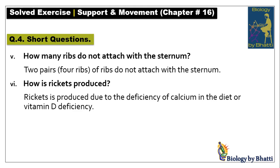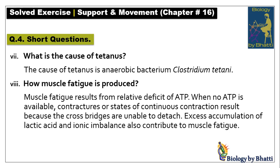Short question five: floating ribs are attached to the last four ribs and are called floating ribs. Number six: how is rickets produced? Rickets is produced due to deficiency of calcium in the diet or vitamin D deficiency. Short question seven: the cause of tetanus is an anaerobic bacterium, Clostridium tetani.